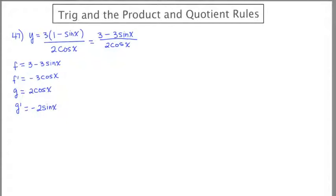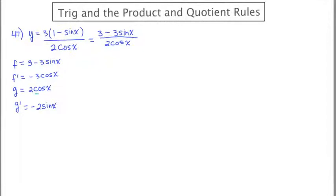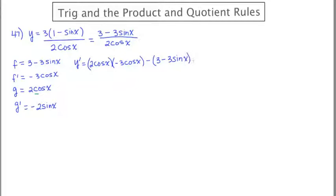It's worth noting that whenever you're taking the derivative of a trig function that begins with the letter c, the answer is going to be negative — it's going to be the opposite of whatever it started being. So let's take the derivative. Using the proper notation, y' is equal to the bottom times the derivative of the top function minus the top function times the derivative of the bottom function, all over the bottom function squared.